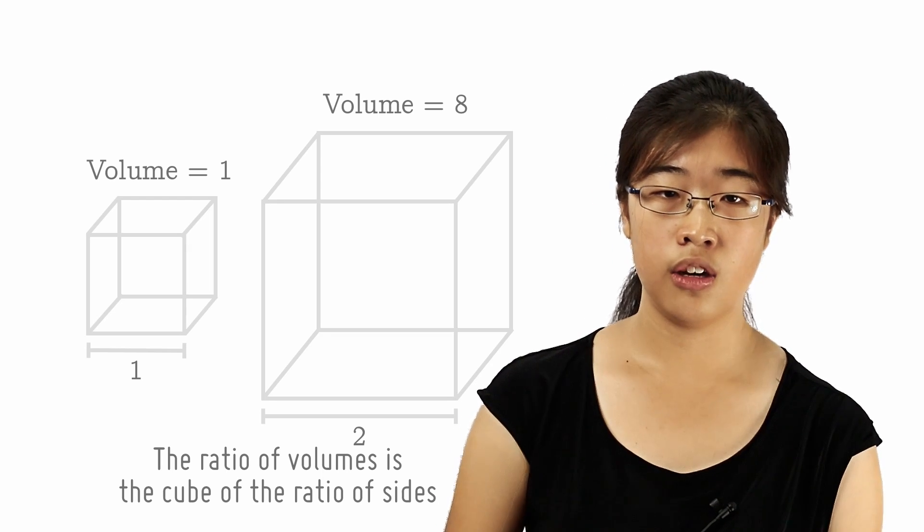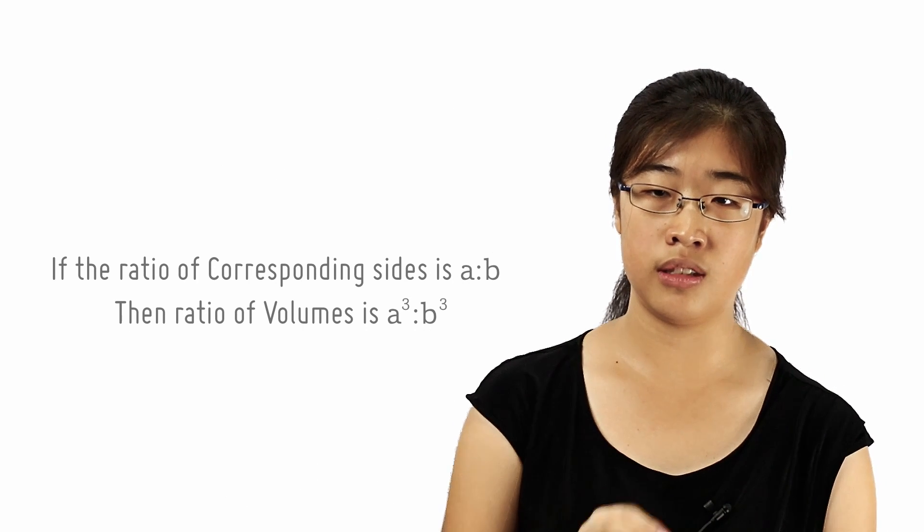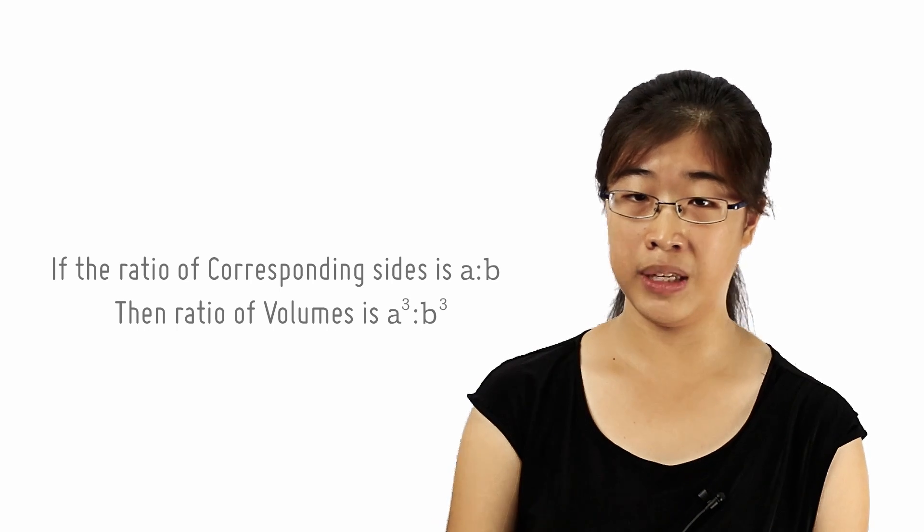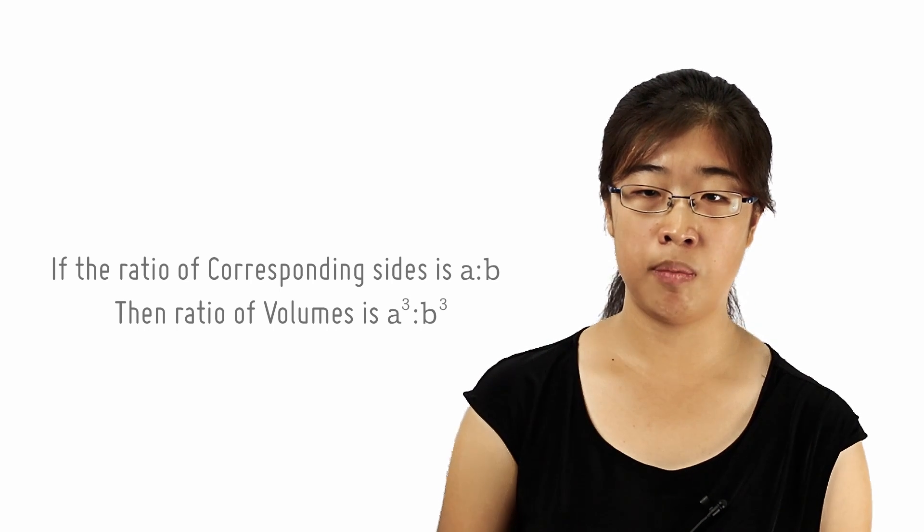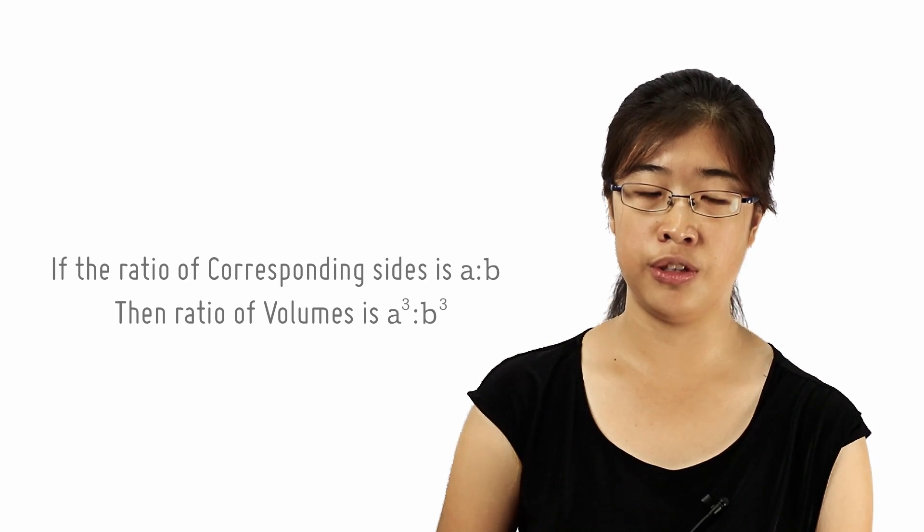So generalizing this, for two similar solids, if the ratio of their corresponding sides is A is to B, then the ratio of their corresponding volume is A cubed is to B cubed. One way to remember this is that solids are all 3D figures, so you need to cube the ratios.